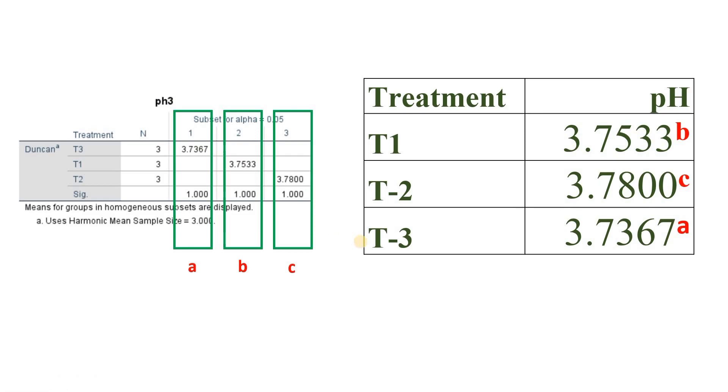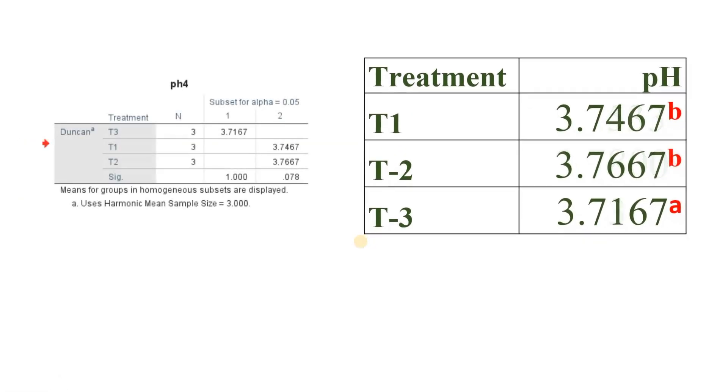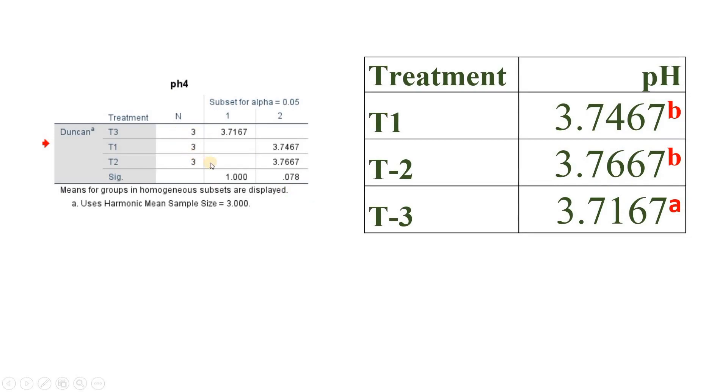One more example: if we see that here we have treatments one, two, three, here we got only two columns. So T3 is in the A column, so I will write here T3 with an A as a superscript.